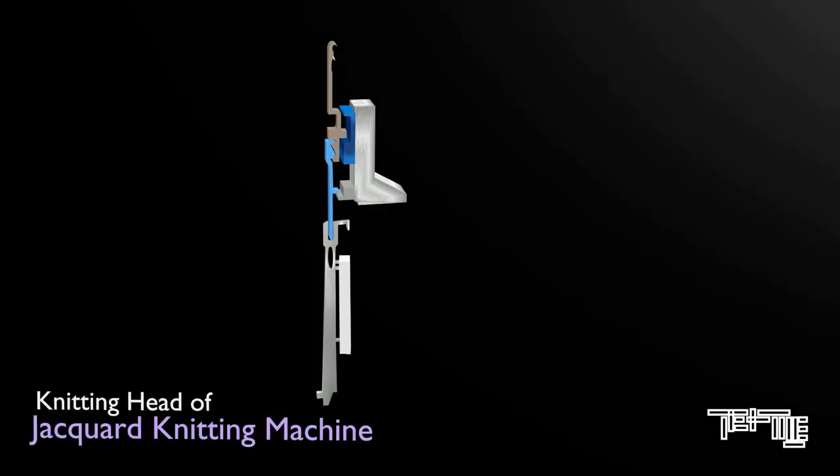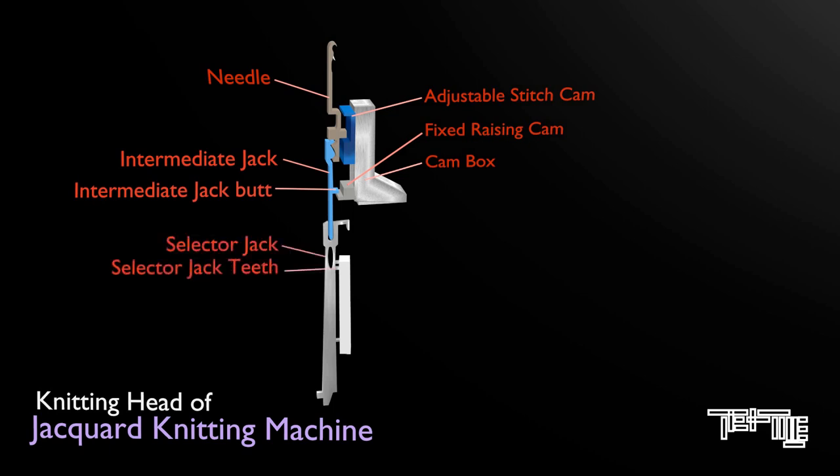Knitting head of jacquard knitting machine consists of needle, adjustable stitch cam, fixed raising cam, cam box, intermediate jack, intermediate jack butt, selector jack, selector jack teeth, pattern jack and interchangeable cartridge.